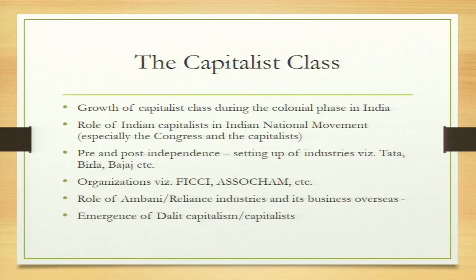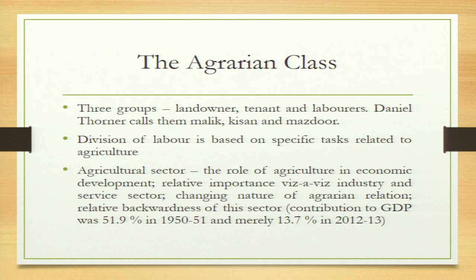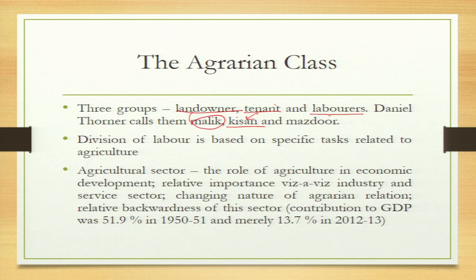The last point is the emergence of Dalit capitalism — people of Dalit caste are also developing a capitalist class. The agrarian class has three groups: landowners, tenants, and laborers. Tenants do not have land and work on the landowner's land. Daniel Thorner calls them Malik (landowners), Kisan (tenants), and Majdur (laborers). Within Kisan, there can be those who have small pieces of land as well as those who have no land. Majdurs certainly do not have any land and just work with either Kisan or Malik.